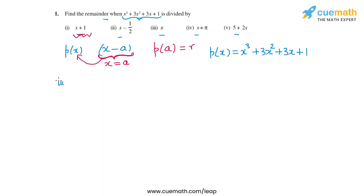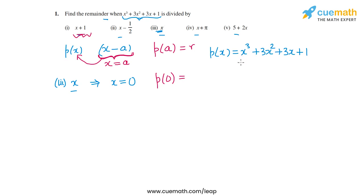In the third part, the divisor polynomial is x, and its zero is x = 0. To find the remainder when p(x) is divided by x, we find p(0). So p(0) = 0³ + 3(0)² + 3(0) + 1, and only the constant term remains, giving a remainder of 1.